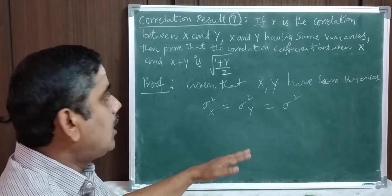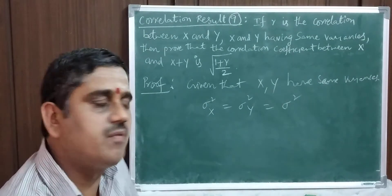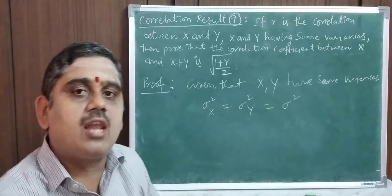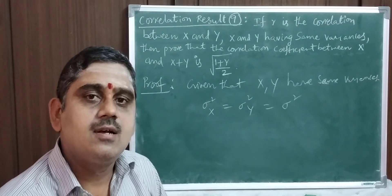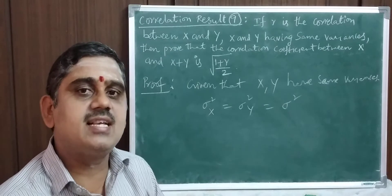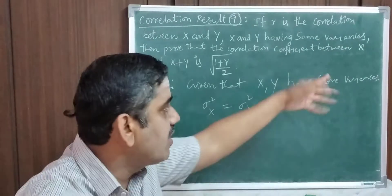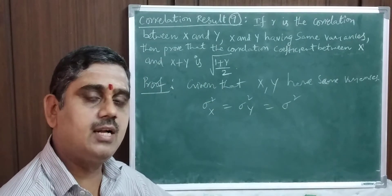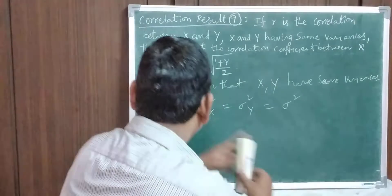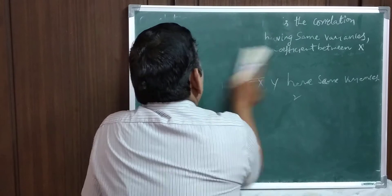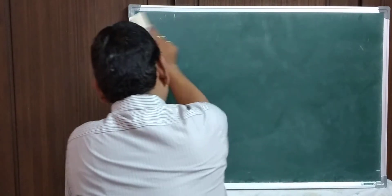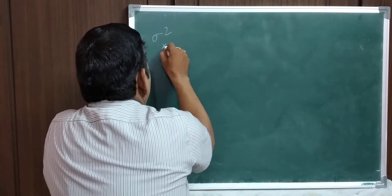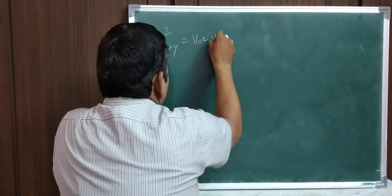Now I start the calculation of correlation coefficient between x and x plus y. For this, we have to calculate variances and covariance. The variance of x need not be calculated — it is simply sigma squared x or sigma squared. The variance of x plus y is going to be calculated. So, sigma squared of x plus y: